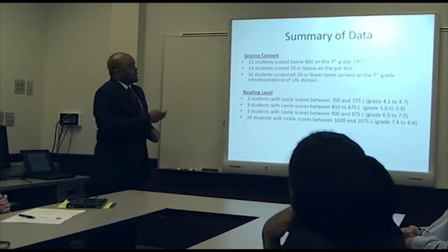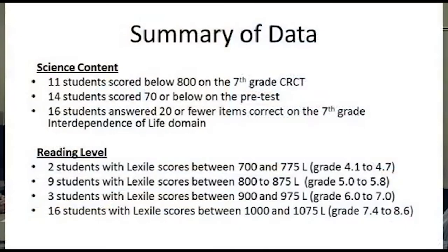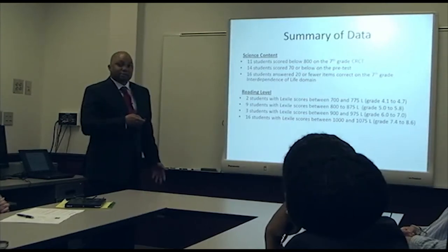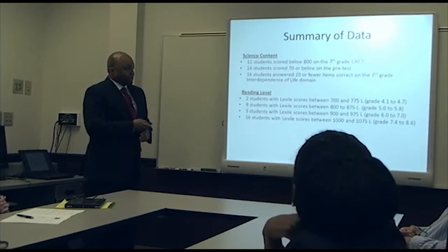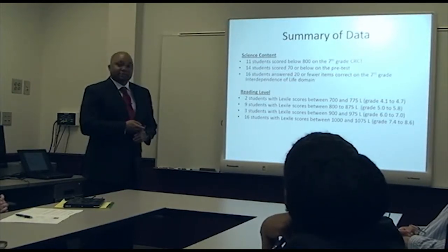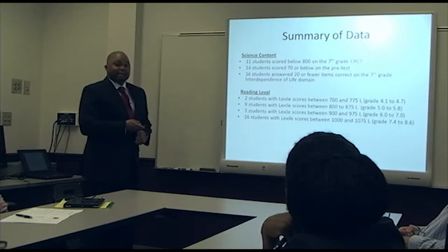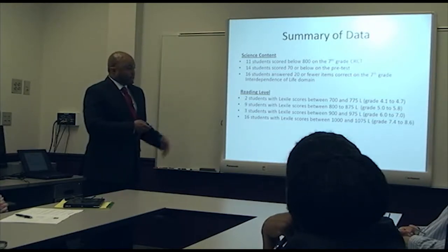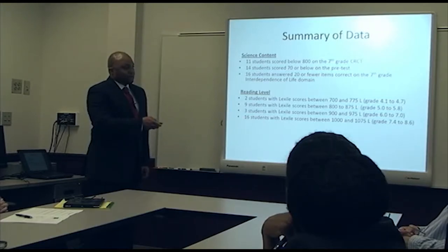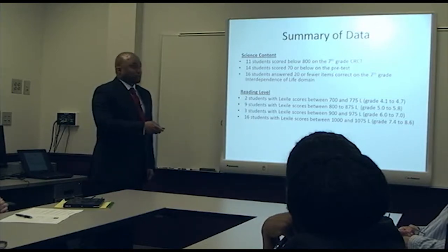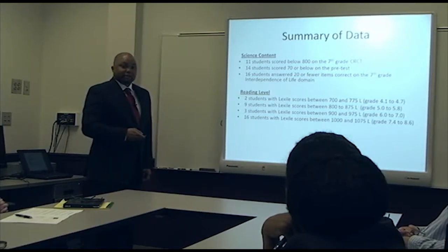To summarize our data: on science content, 11 students scored below 800 on the seventh grade CRCT; 14 students scored 70 or below on the pre-test; and 16 students answered 20 or fewer items correctly on the interdependence of life domain. For reading, 2 students have Lexile scores between 700–750 (fourth grade); 9 between 800–875 (fifth grade); 3 between 900–975 (sixth to seventh grade); and 16 between 1,000–1075 (seventh to latter eighth grade level).